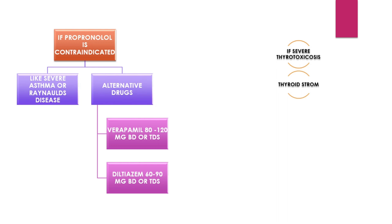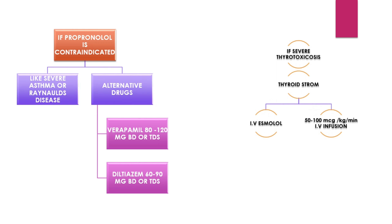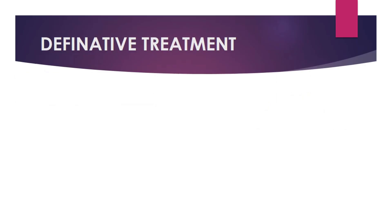If the patient has severe thyrotoxicosis or thyroid storm, we have to give the beta blocker intravenously. We can give IV esmolol at a dose of 50 to 100 micrograms per kg per minute as an infusion. This is all about the symptomatic therapy.